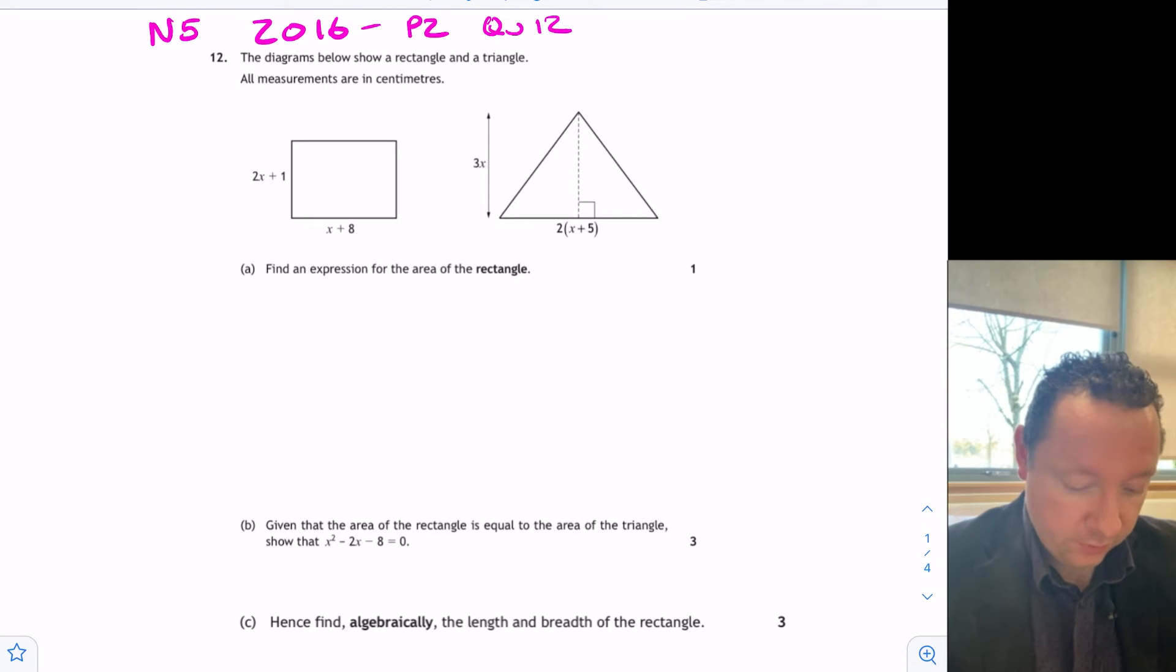Then, given the area of the rectangle equals the area of the triangle, show that x squared minus 2x minus 8 equals 0 for three marks. Then, find the algebra equal to the length of the rectangle for three marks as well. Have a look at this and see if you can get anywhere with it before we come back and discuss it and see what the solution is.